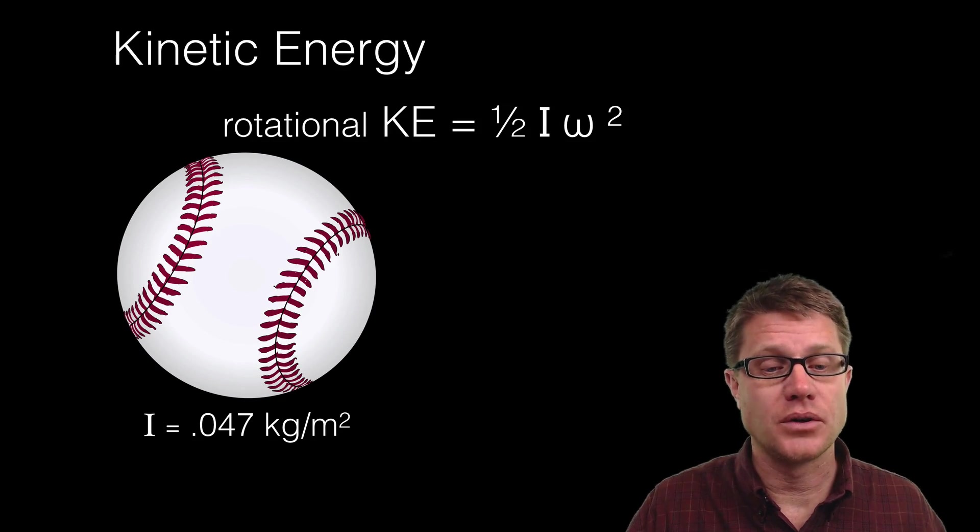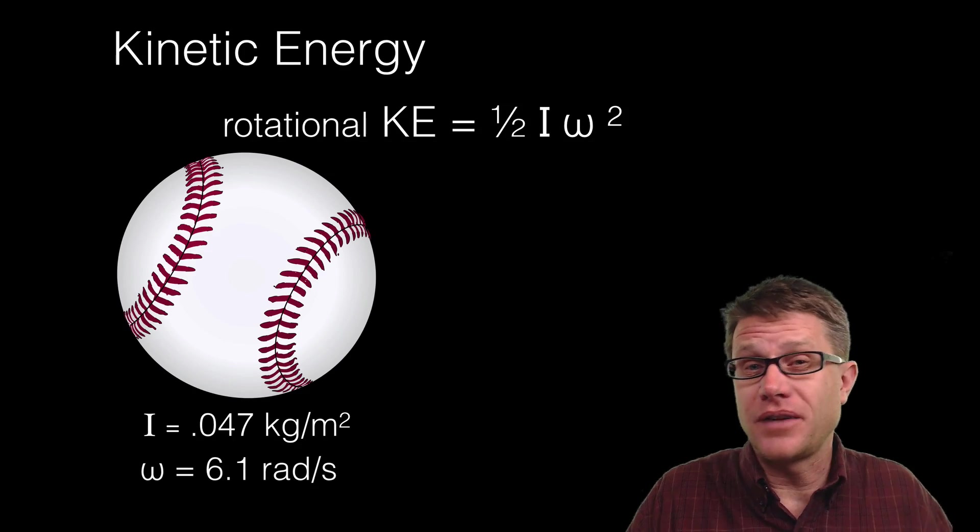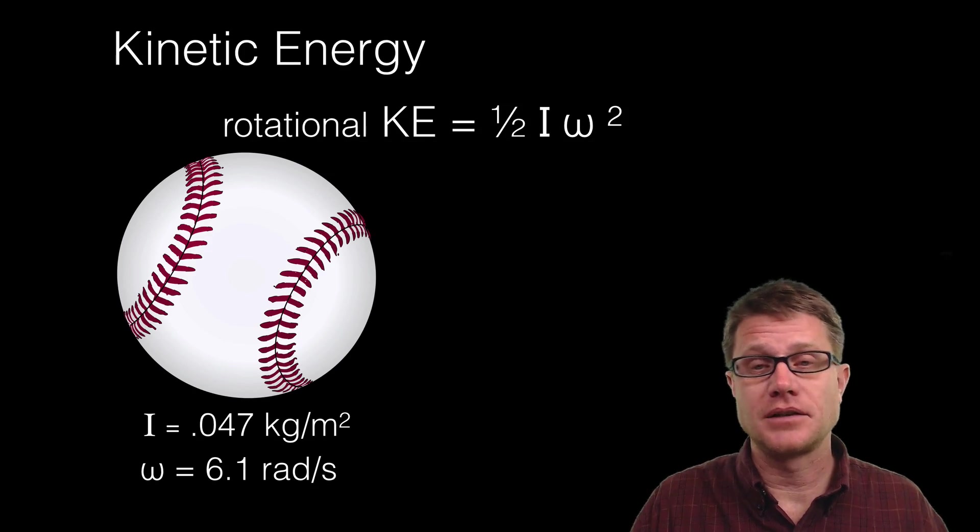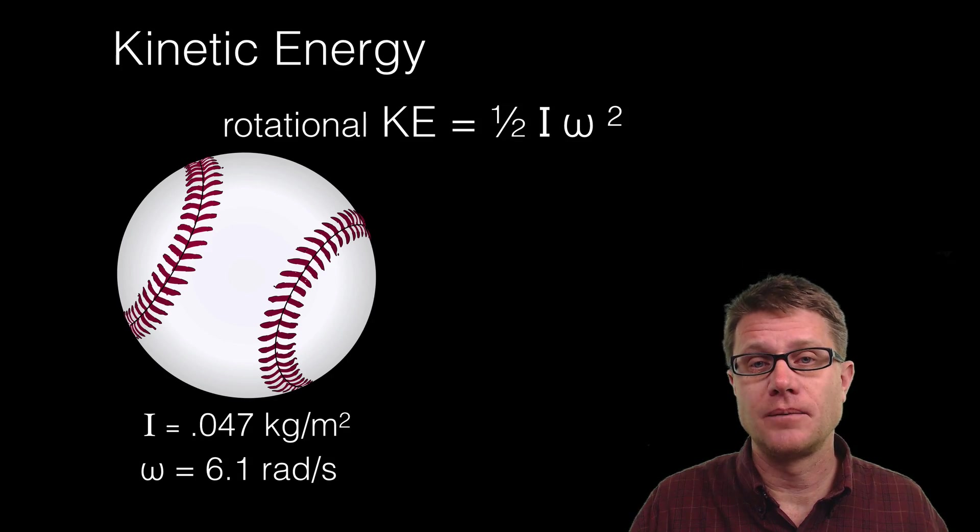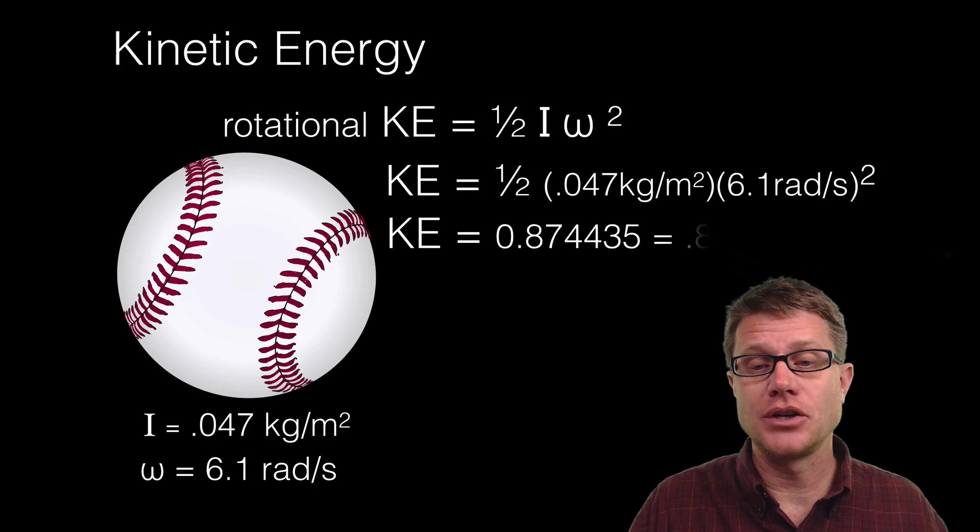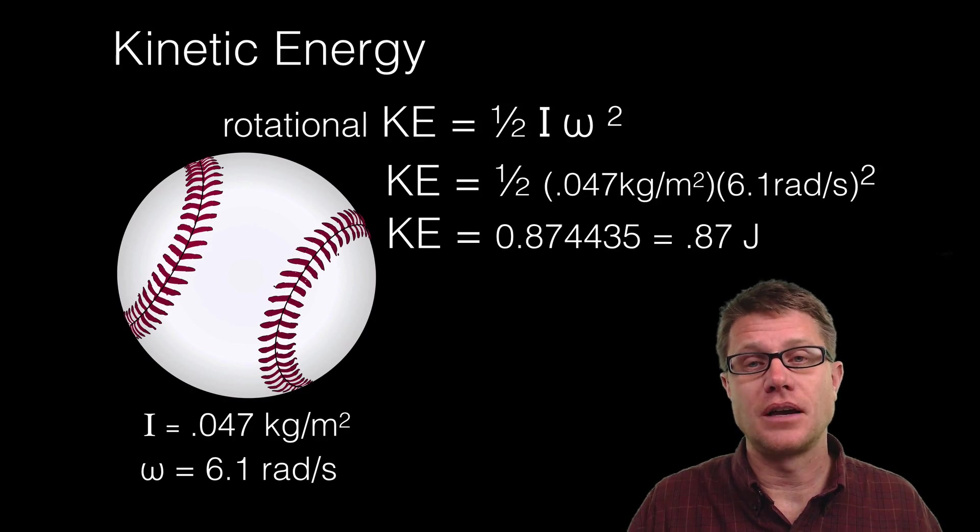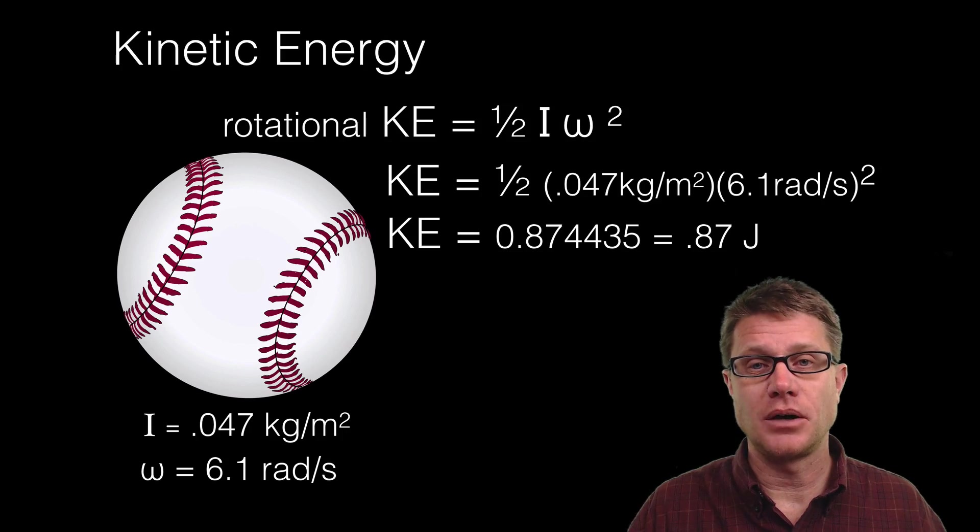And let's say that is 0.047 kilogram meters squared. And then I have to know how fast it is rotating. So its angular velocity is 6.1 radians per second. And then I simply plug in those values. So I put those into my equation and I can figure out using significant digits that it is 0.87 joules of energy just in that spinning baseball.